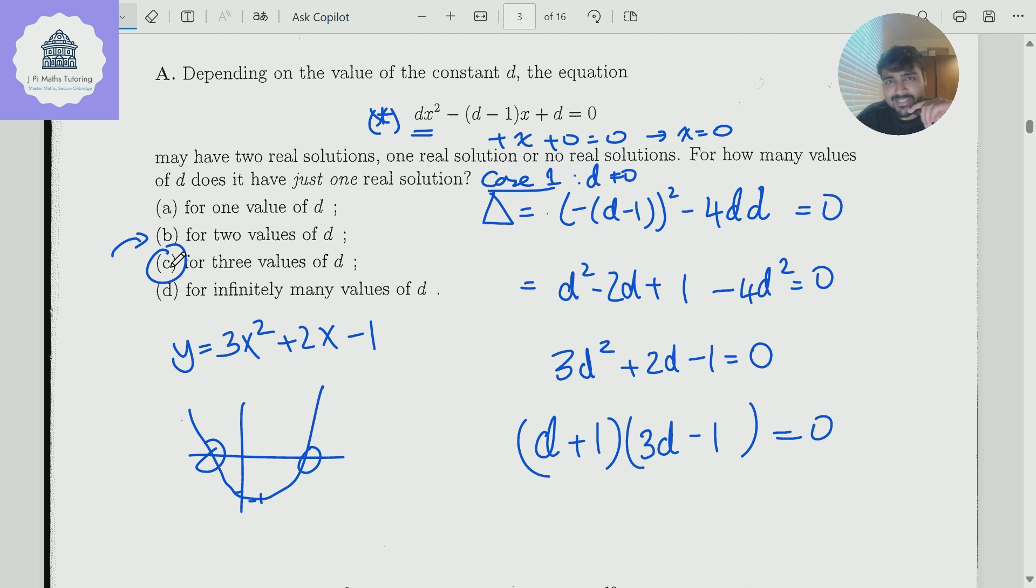In fact, I made a video about this maybe about a year or so ago, and it caught out a lot of people as well. So do be super, super careful. A-level, they teach you to just go, how many real solutions? Boom, go straight into the discriminant. Take a step back and think. Does that apply? In this case, it doesn't. When d is 0.